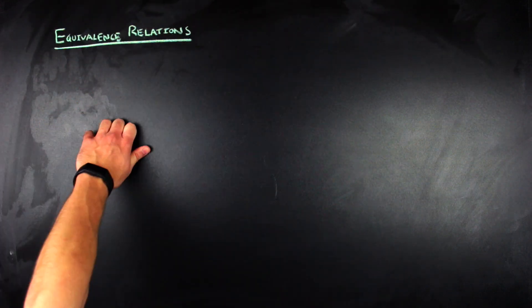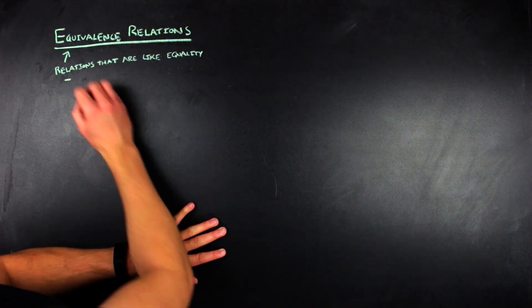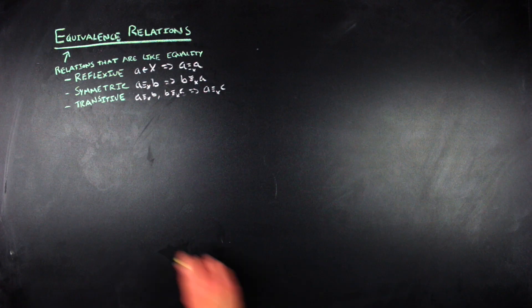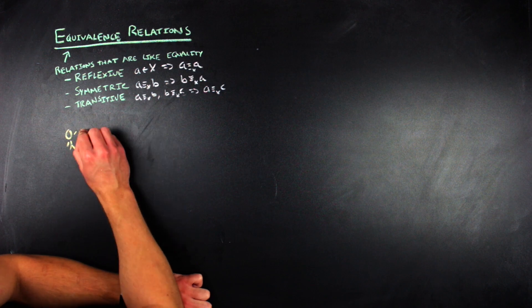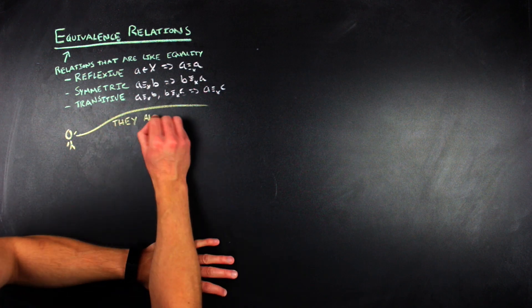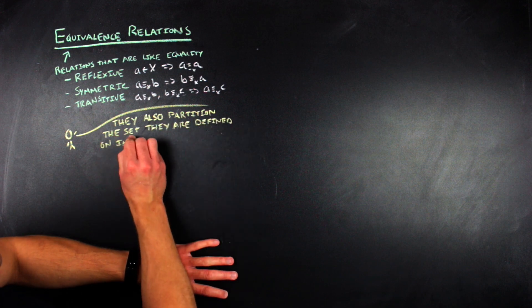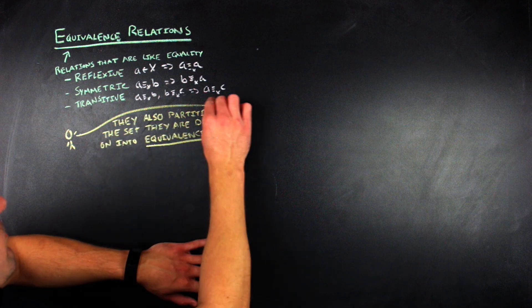There's one other tool we're going to need: the idea of an equivalence relation. Equivalence relations are just relationships that act like equality — they are reflexive, symmetric, and transitive. Another way to think about equivalence relations is that they partition the set they are defined on into sets of equal elements, or what are called equivalence classes.